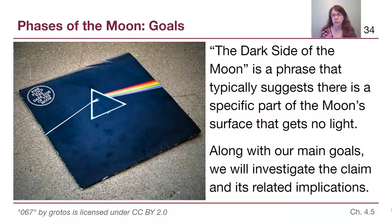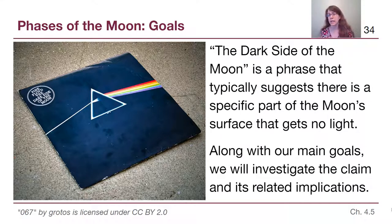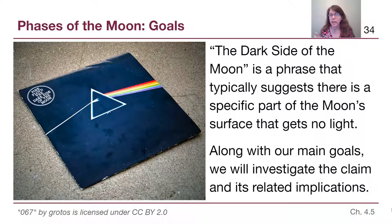This video is going to start with a couple of common misconceptions and lay the groundwork for the more detailed second video. The first thing I want to confront is this idea of the dark side of the moon — a phrase typically used to suggest the moon has a single side that is always hidden from sunlight, always dark. We want to investigate this claim and some of its implications.